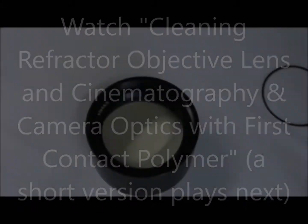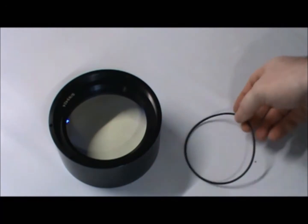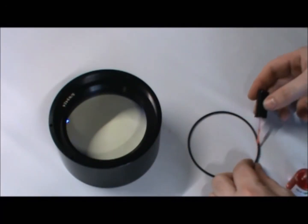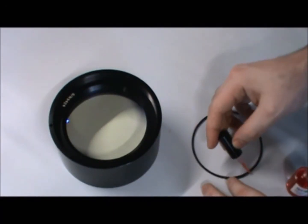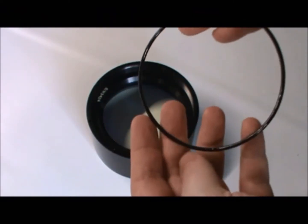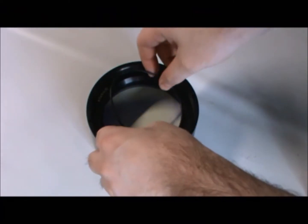Before each process, remove as much contamination as possible using first contact polymer before tackling the water spots. We do this because the water spots may contain non-polar solutes and the polymer might remove them, and if it doesn't, you want to remove contaminants that could potentially scratch your optic when tackling the spots.